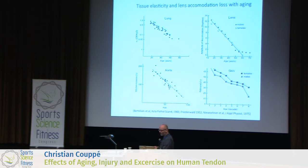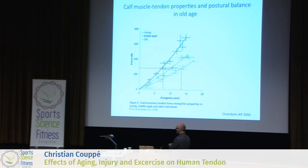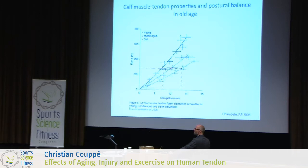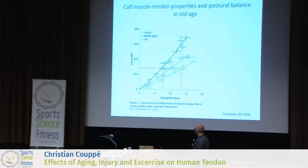However, when we look at tendon specifically — a study from Narichi's group in England by Marco Narichi and Onambele Gladys Onambele — they looked at a group of elderly, middle-aged, and young men. Using ultrasound on the Achilles tendon to test force-deformation, they found the elderly were actually more compliant than the young persons. That was a paradox compared to what we might expect.